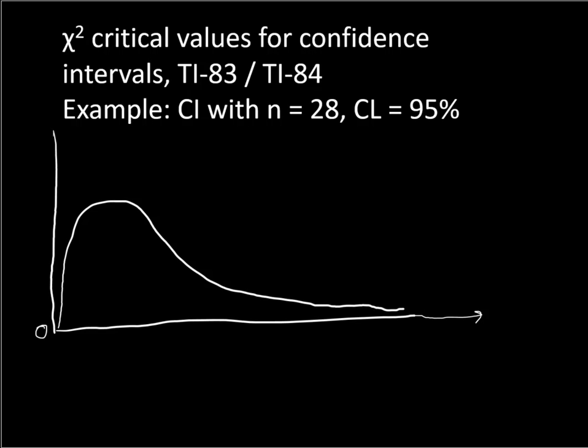We're going to use the example where we have a confidence interval that we're trying to build with a sample size of 28 and a confidence level of 95%, which means we want to find a lower chi-square critical value and an upper chi-square critical value to plug in to the formula.